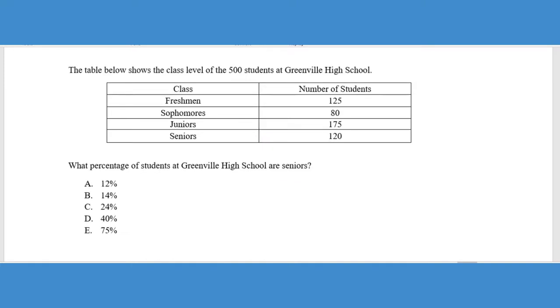On this next problem, they give us a table and you'll see in the later parts of this playlist, we actually do a little video on tables and graphs and basically data representation on the ACT math. So this could kind of fall in either one of those categories. But since the end question asks us what percentage, we're going to take this as a pre-algebra percentage question, but it does require some table reading skills. It says the table below shows the class level of the 500 students at Greenville High School. So we have the freshmen, sophomores, juniors, and seniors, how many there are in each class. Now it says, what percentage of students at Greenville High School are seniors?